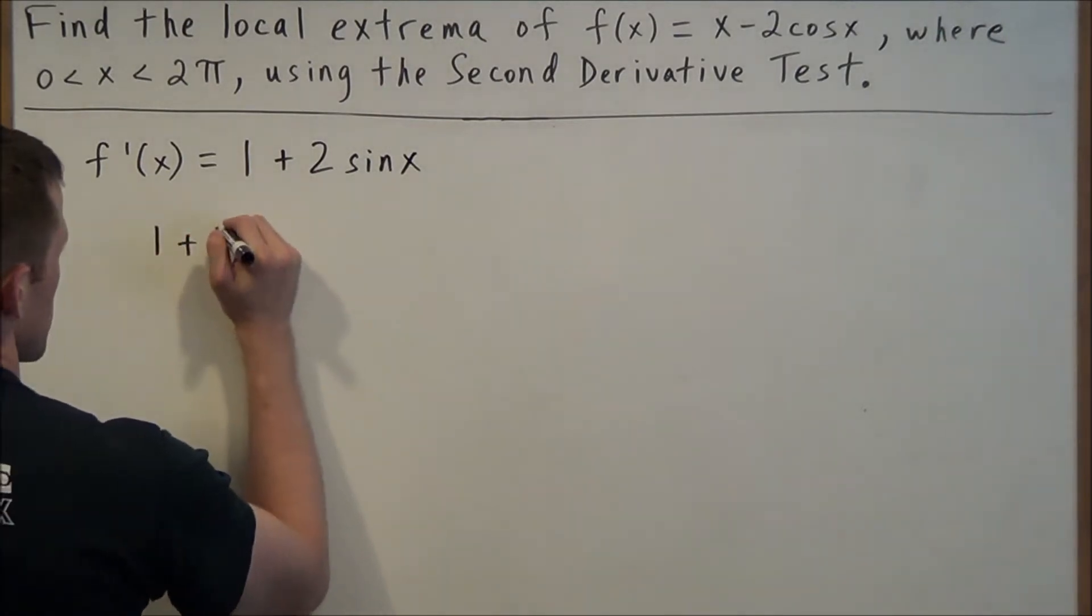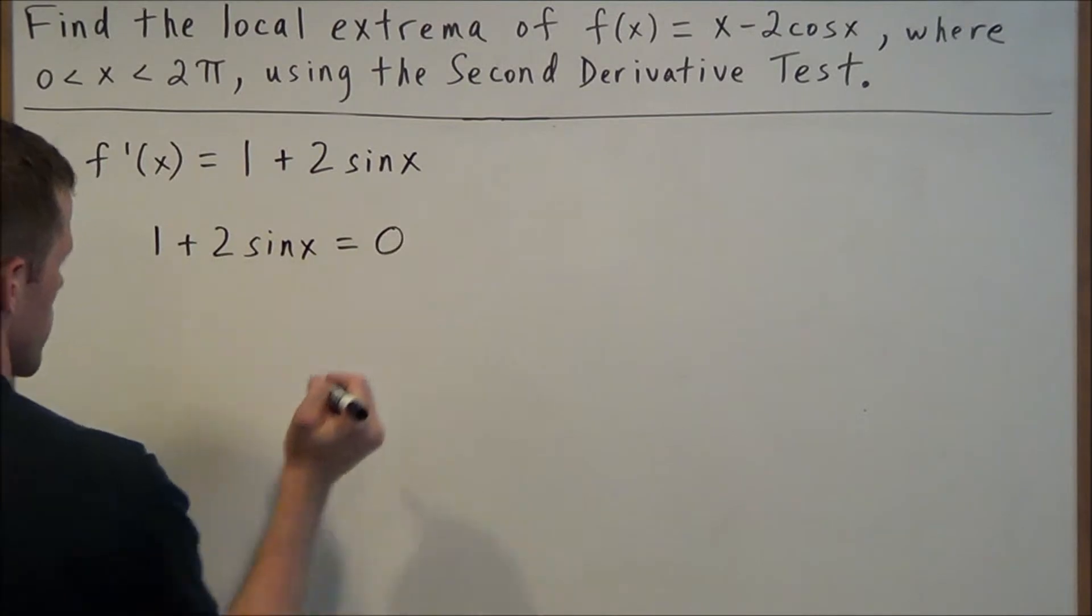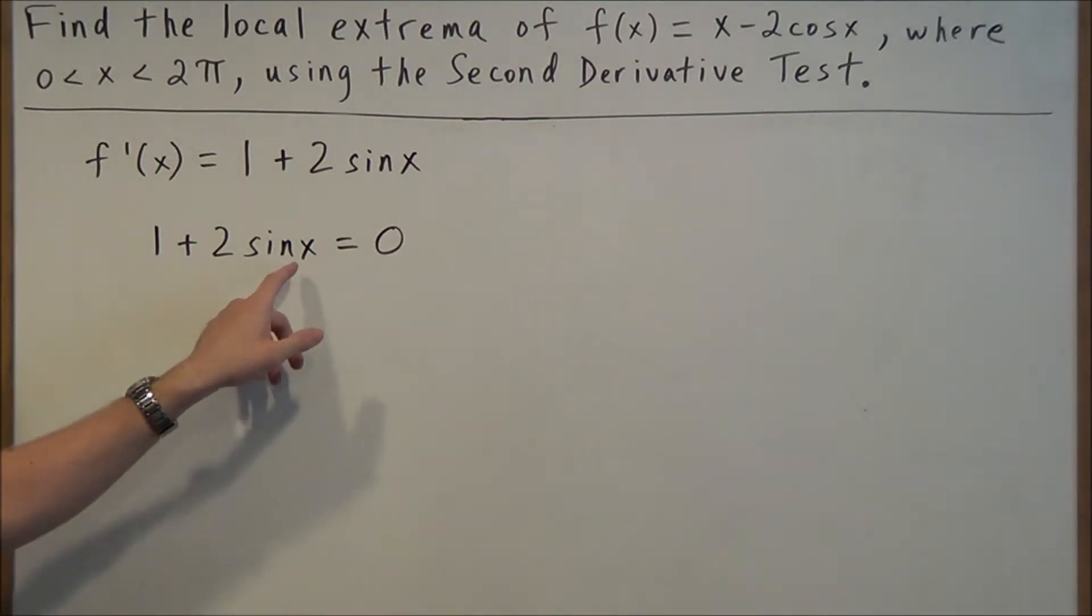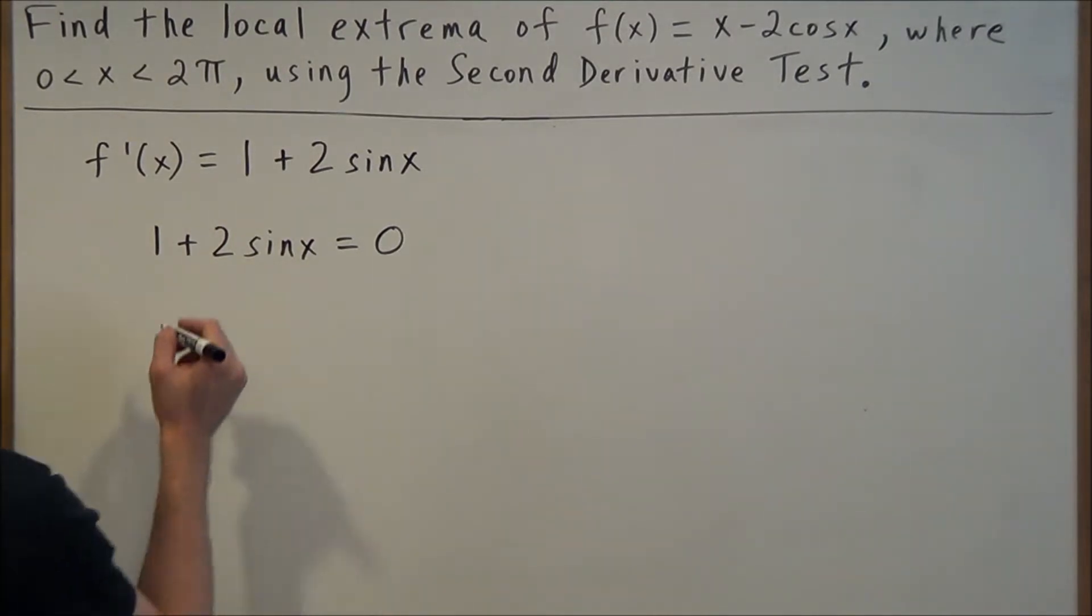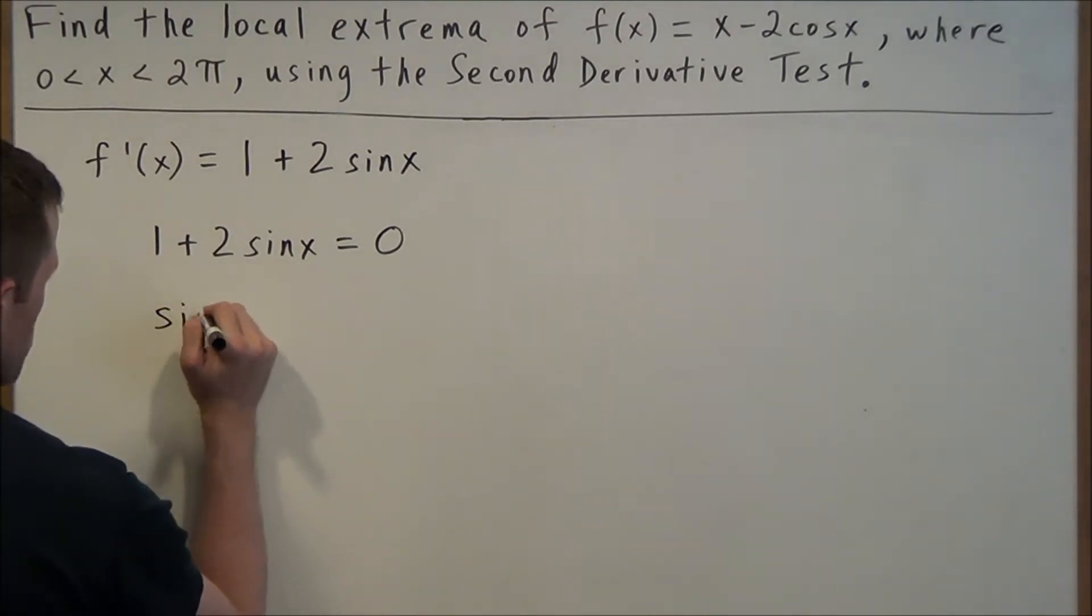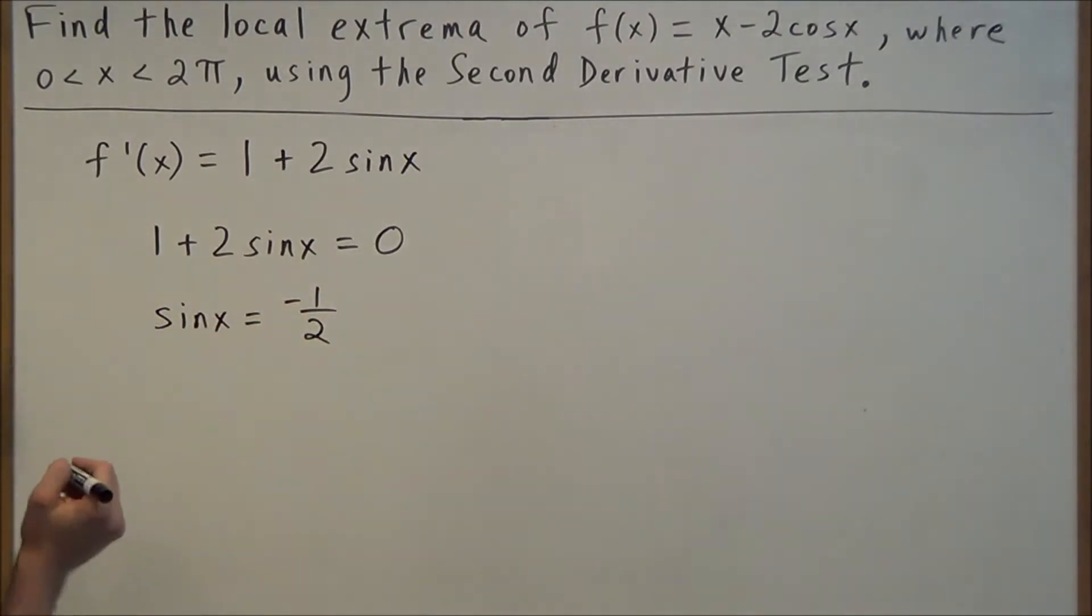So we'll have 1 + 2sin(x) = 0. To find the x values that will make this true, we're going to isolate sin(x). We'll subtract 1 and divide by 2 on both sides, so we have sin(x) = -1/2. Now we should recall that sine is positive in quadrants 1 and 2.